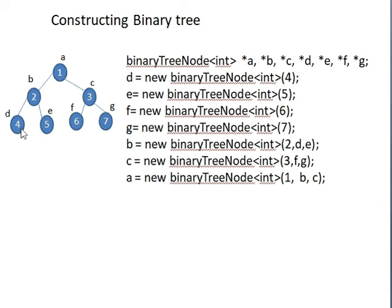Once the terminal nodes are written, construct their parent nodes. The parent of D is B. For node B, the element to insert is 2, the left child of B is D, and the right child of B is E. So we write: b = new BinaryTreeNode(2, d, e). This uses the third configuration of BinaryTreeNode which takes three arguments: the element, the left child, and the right child. You now get the B-D-E structure.